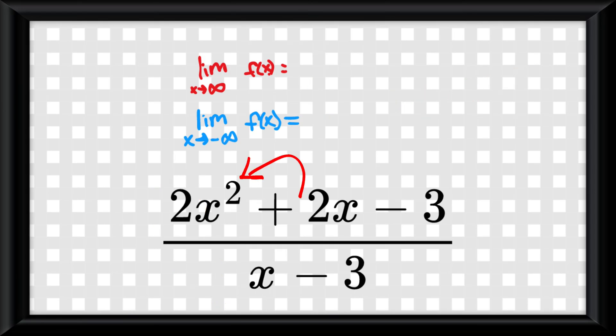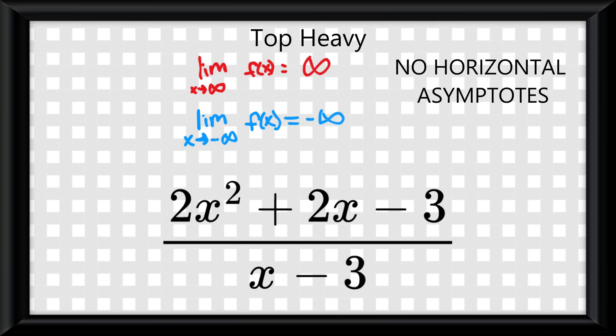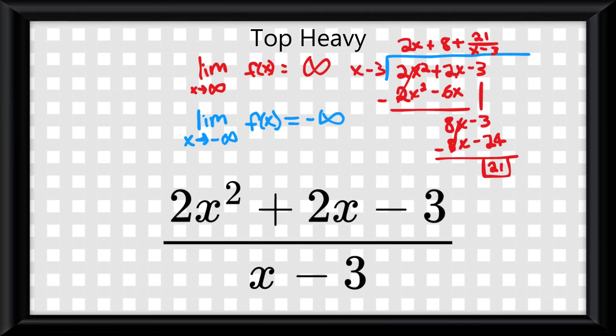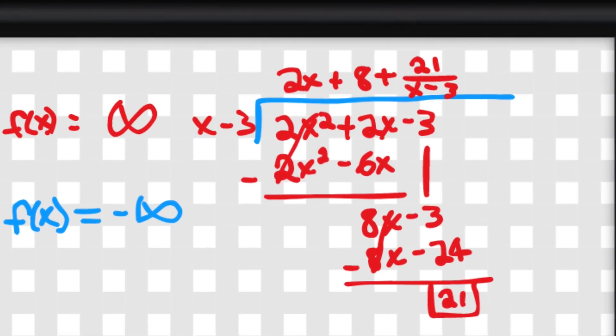If there is a higher degree in the numerator, the function is said to be top-heavy. For top-heavy functions, there will be no horizontal asymptotes, rather slant or oblique asymptotes. To solve for these, simply use polynomial long division to divide these two functions, and the quotient is the slant or oblique asymptote.